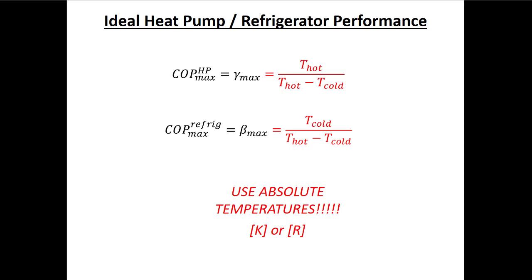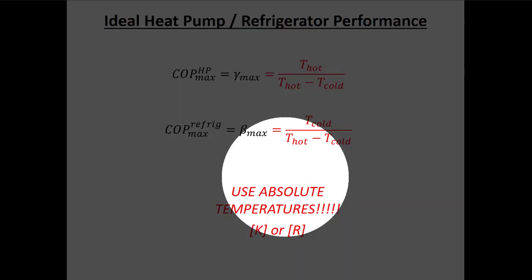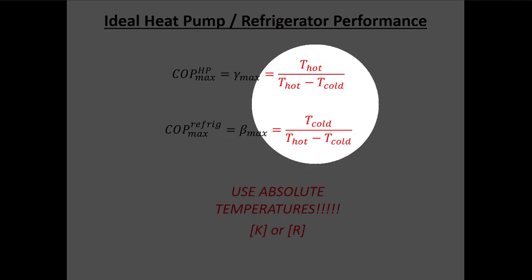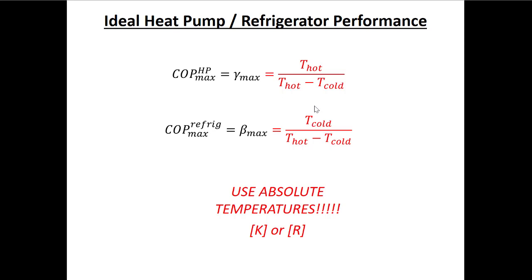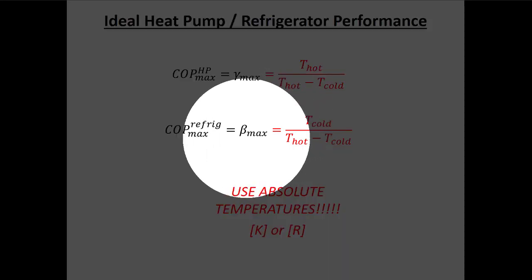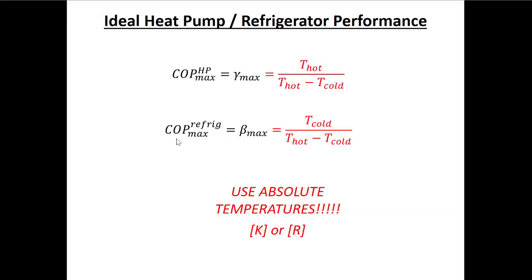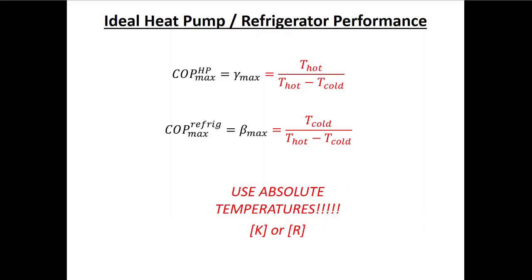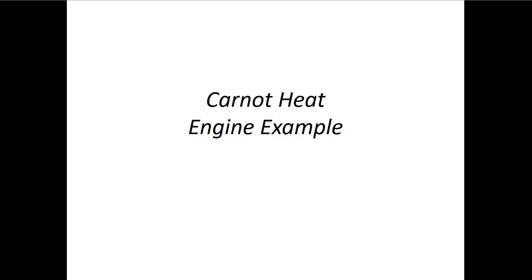Refrigerators and heat pumps have similar ideal equations where ratios of heat transfers become ratios of temperatures. Whether computing coefficient of performance or thermal efficiency, it's safest to always use absolute temperatures — Kelvin or Rankine. Today we'll go through an example of a Carnot heat engine in the form of a Rankine cycle.